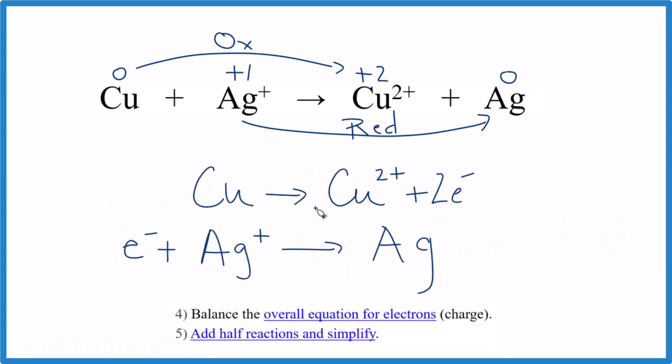At this point, we have a bit of a problem because the copper lost two electrons. The silver, it gained the electrons. But here we have two and just one. So that doesn't work out. That's not balanced. So we have to balance the overall equation for electrons. Then we'll add the half reactions and simplify, and we'll have our balanced redox reaction.